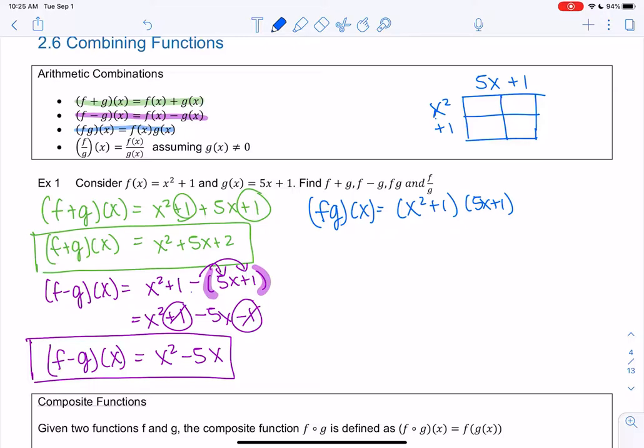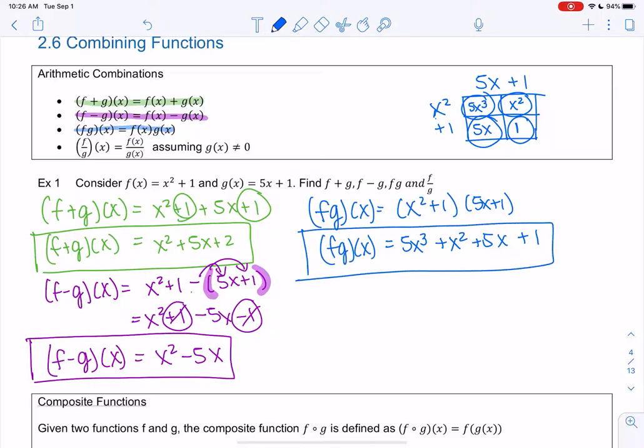Make sure you get them all. So x squared times 5x is 5x cubed. x squared times 1 is x squared. So I'm just multiplying the outside pieces. 5x times 1 is 5x. And then 1 times 1 is 1. And then if you have any like terms, you combine them. Otherwise, you just write it out. So it's 5x cubed plus x squared plus 5x plus 1. And that's fg for f times g of x. So make sure you don't miss any terms. I really like using boxes.